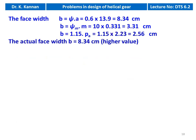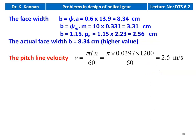Face width calculation: b = ψ × a = 0.6 × 13.9 = 8.34 cm; b = ψm × m = 10 × 0.331 = 3.31 cm; b = 1.15 × axial pitch = 1.15 × 2.23 = 2.56 cm. We take the highest value: b = 8.34 cm. Pitch line velocity: v = π × 0.0397 × 1200 / 60 = 2.5 m/s.